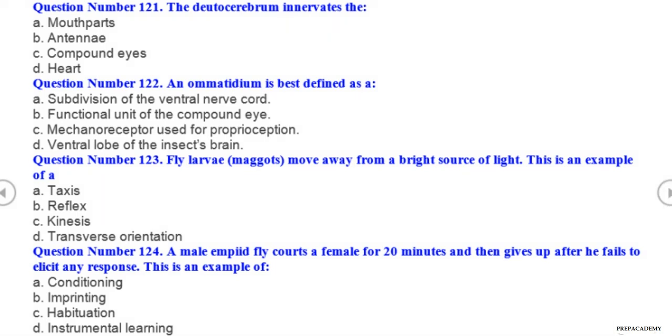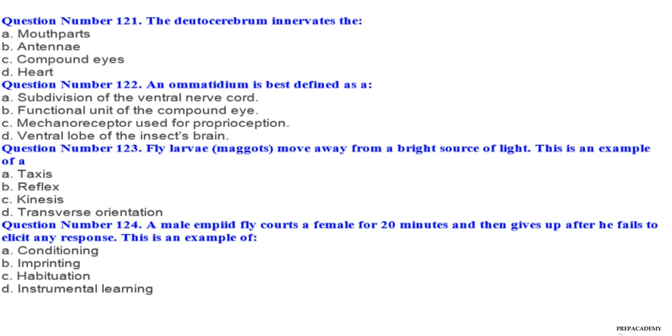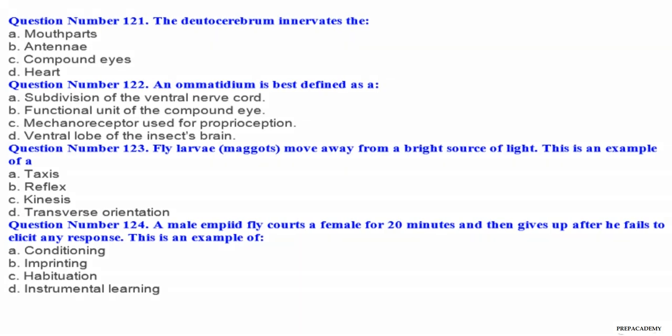This portion is about plant protection, entomology and agriculture officer. Question number 123. Fly larvae (maggots) move away from a bright source of light. This is an example of: A taxes, B reflex, C kinesis, D transverse orientation. Question number 124. A male empid fly courts a female for 20 minutes and then gives up after he fails to elicit any response. This is an example of: A conditioning, B imprinting, C habituation, D instrumental learning.